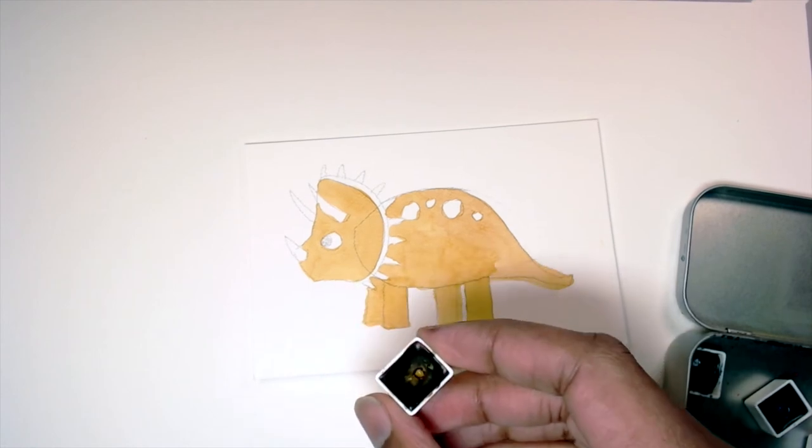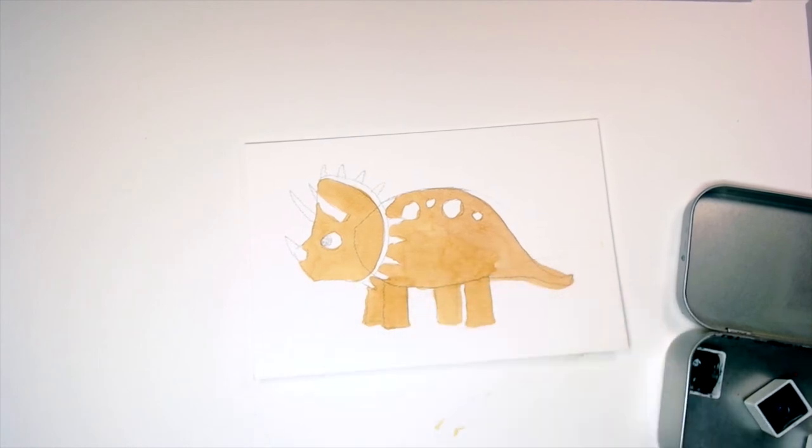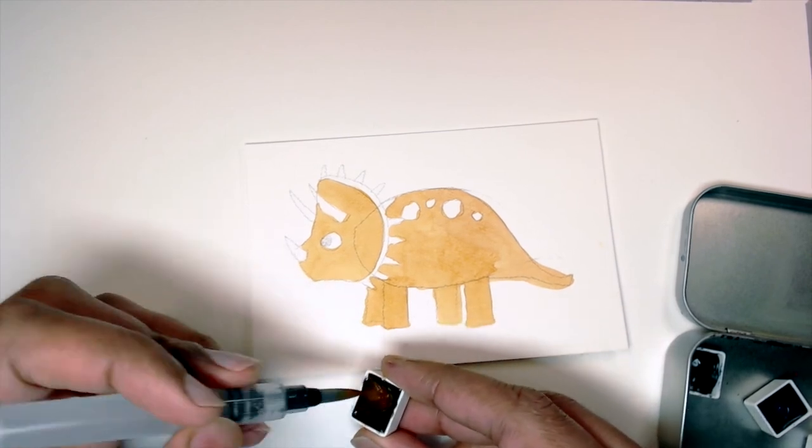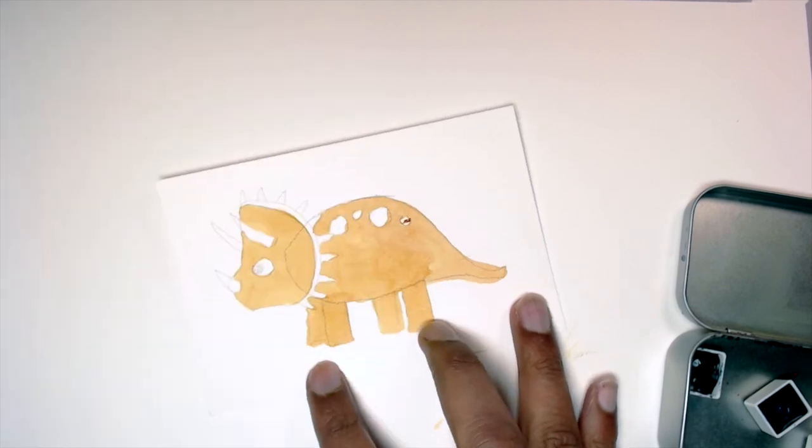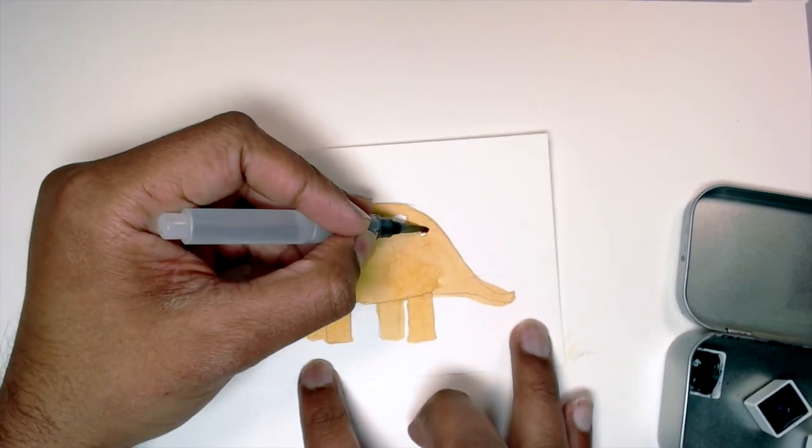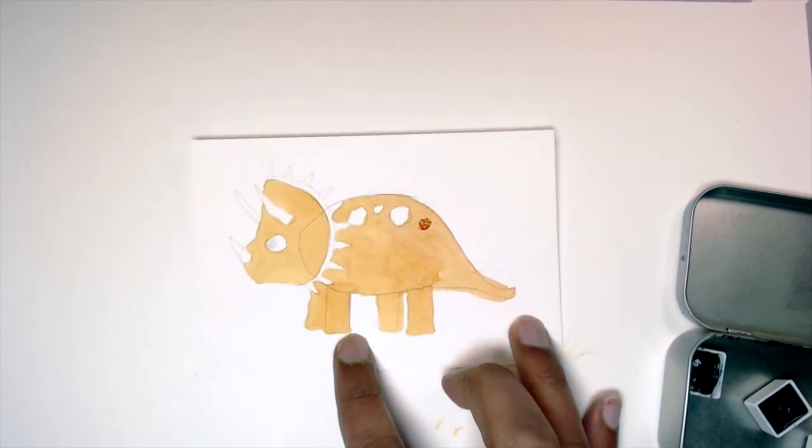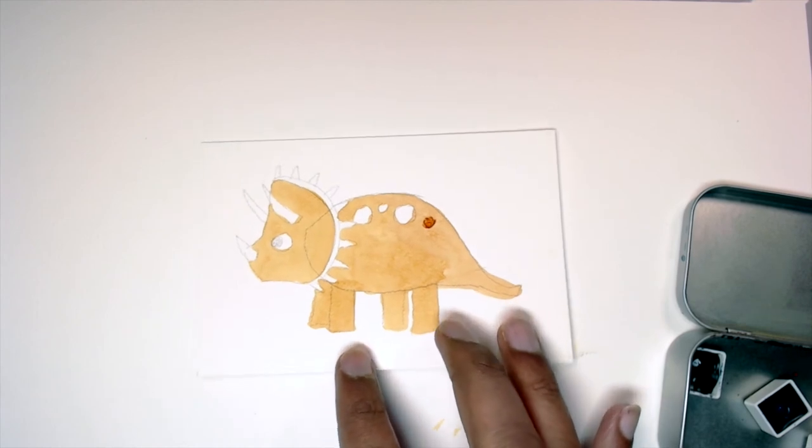So I have my brown here, and I'll just go in and take some of that brown, and I'll put it down. I don't want it to get too dark, so I'm going to mix it with a good amount of water.